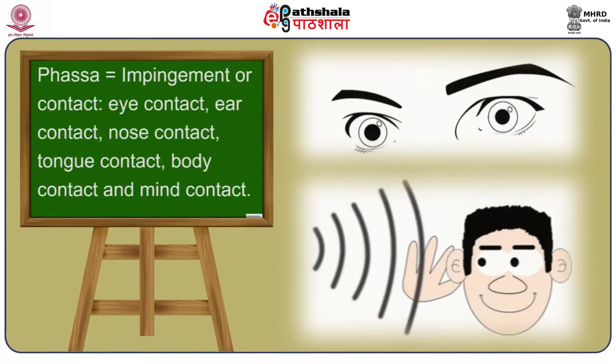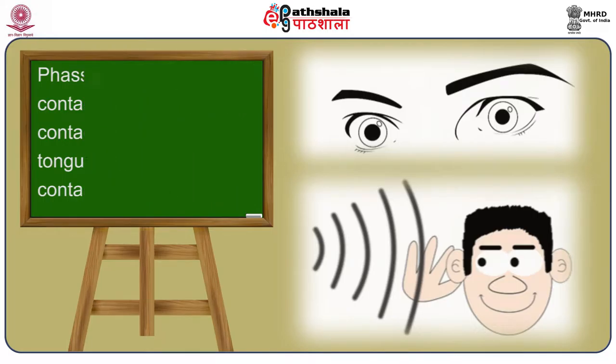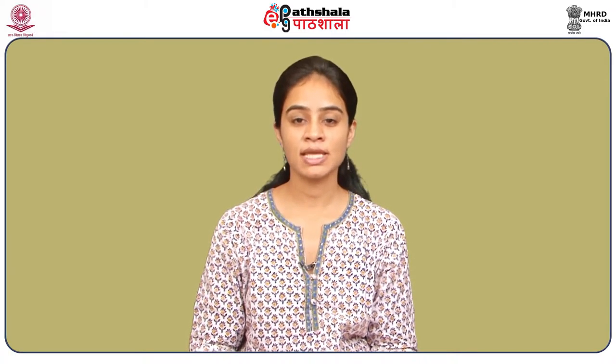The sixth link of Pratitya Samutpad, or Dependent Arising, is called Phas, which means contact. It points to eye contact, ear contact, nose contact, tongue contact, body contact, and mind contact. Phas comes into existence after the six sense bases have formed.